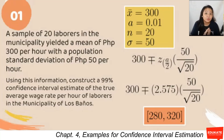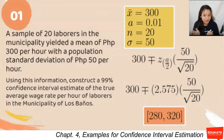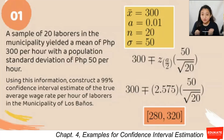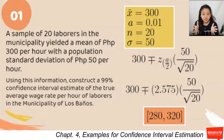The sample size is 20 and the population standard deviation is 50. Substituting into the expression, we look for z sub 0.01/2, which is z sub 0.005. The value from the z-table is 2.575.